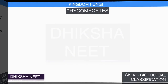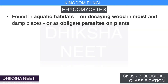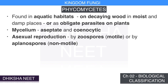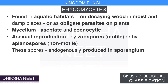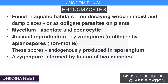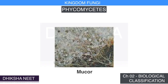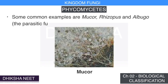Phycomycetes: members are found in aquatic habitats, on decaying wood, moist and damp places, or as obligate parasites on plants. The mycelium is aseptate and coenocytic. Asexual reproduction takes place by zoospores (motile) or aplanospores (non-motile), produced endogenously in a sporangium. A zygospore is formed by fusion of two gametes that may be isogamous, anisogamous, or oogamous. Common examples are Mucor, Rhizopus (bread mold), and Albugo (parasitic fungi on mustard).